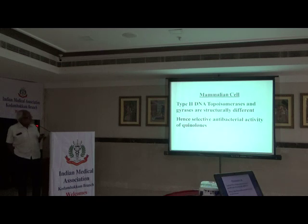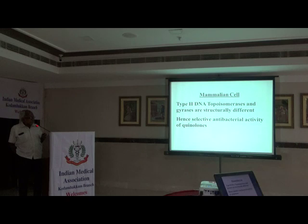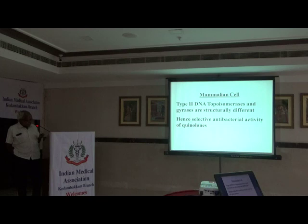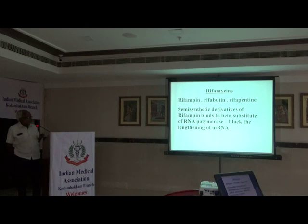Mammalian cells have type 2 topoisomerase, which is structurally different from bacterial topoisomerase. Hence, selective activity against bacterial cells is achieved. The mammalian structure can also be attacked, but because it is structurally different, we are protected and only the bacterial cell is targeted. Rifamycins act by inhibition of the beta subunit of RNA polymerase, blocking elongation of transcription by RNA polymerase.